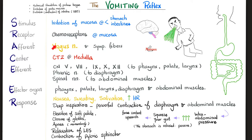The afferent pathway: from the parasympathetic it's the vagus nerve; from the sympathetic we have sympathetic fibers, usually part of the greater splanchnic nerve or the lesser splanchnic nerve — the word splanchnic means visceral. The center is the chemotactic trigger zone in the medulla oblongata. The efferent involves many nerves including cranial nerves 5, 7, 9, 10, and 12 to the pharynx, palate, larynx, and posterior tongue. The phrenic nerve from C3, C4, C5 — keep the diaphragm alive — goes to the diaphragm. Spinal nerves go to the abdominal muscles. The effector organs are the pharynx, palate, larynx, diaphragm, and abdominal muscles.